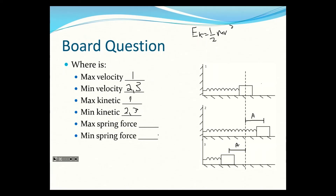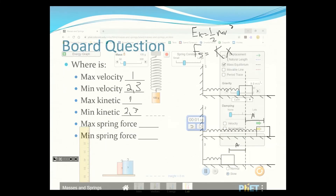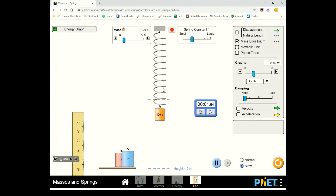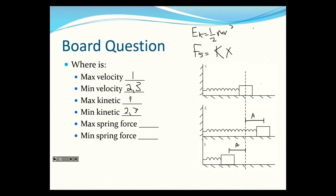For maximum spring force, recall F = kx. The spring constant doesn't change, but the displacement x does. At the equilibrium position there's no displacement, so spring force is zero — that's the minimum. The maximum spring force is at positions two and three, where the spring is stretched or compressed the most and wants to return to equilibrium.